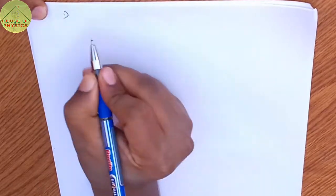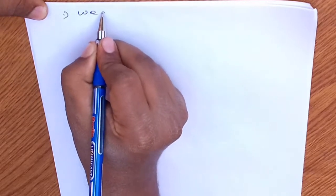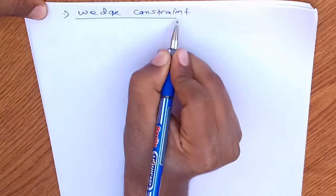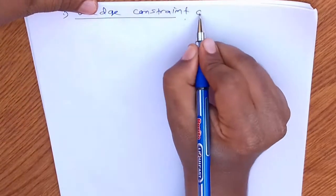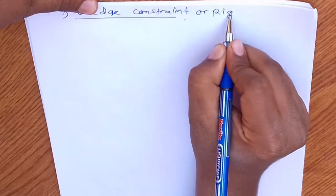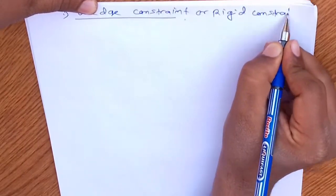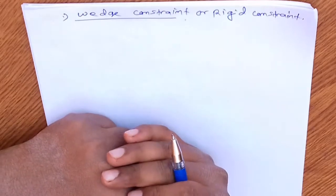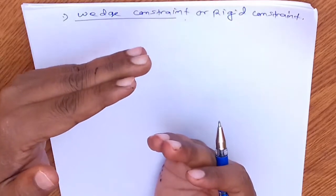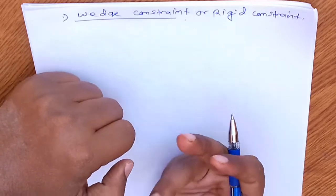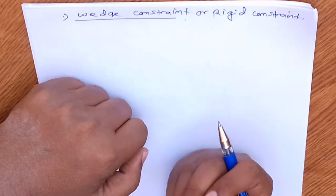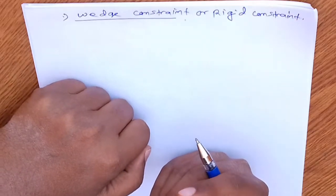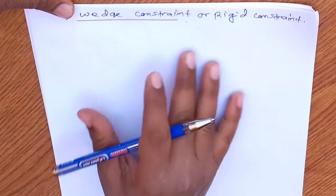The second session includes the rigid constraint, sometimes also known as the 'rigid body constraint.' This is a very small session to be dealt with generally. In the current context, these things are rarely asked, but you will find the application of this rigid constraint in different chapters, especially in rotation or in the center of mass sector.